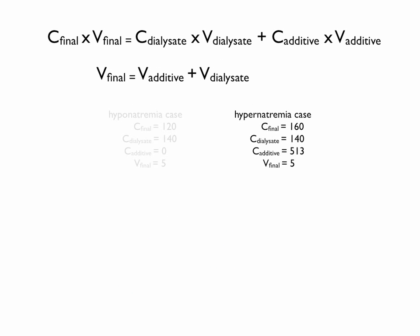We can do the hypernatremia case here. The final concentration of your sodium will be 160. The dialysate concentration is 140. The additive in this case will be 3% saline, which has a sodium concentration of 513 milliequivalents per liter, and again our final volume will be 5 liters.